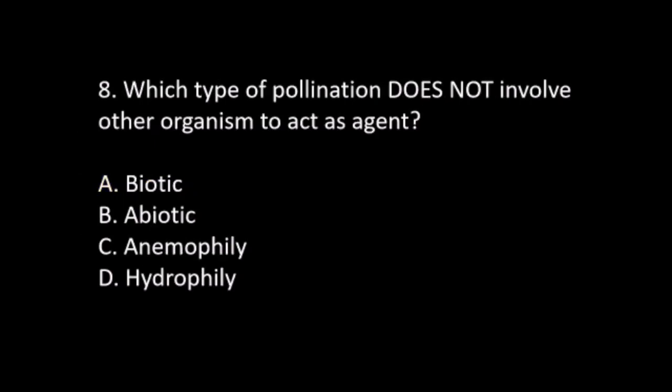Number 8. Which type of pollination does not involve other organisms to act as agent? A. Biotic. B. Abiotic. C. Anomophily. D. Hydrophily. The answer is B. Abiotic.